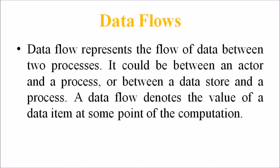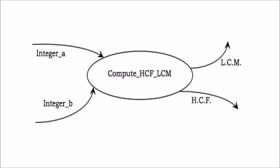The next topic is data flows. Data flows represent the flow of data between two processes. It could be between an actor and a process, or between a data store and a process. A data flow denotes the value of the data items at some point of the computation, and this value is not changed by the data flow. In the DFD, a data flow is represented by a directed arc or arrow labeled with the name of the data item it carries. In this figure, integer A and integer B represent the input data flows to the process, while LCM and HCF are the output data flows.